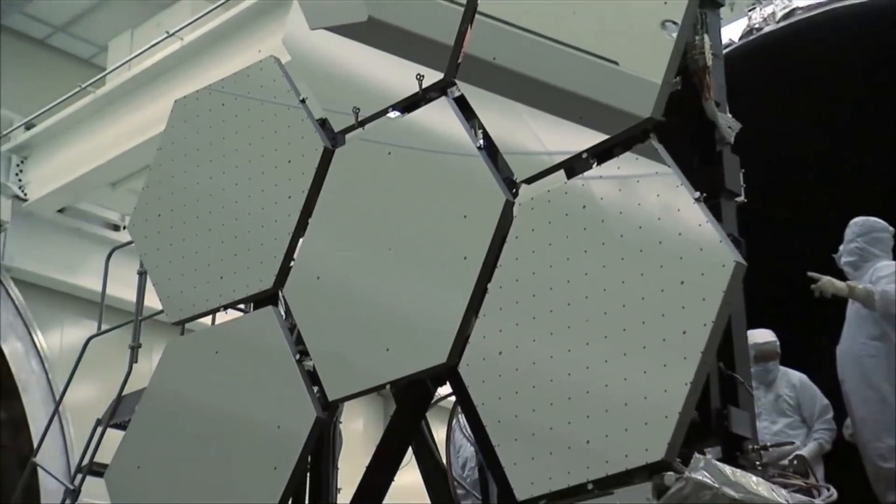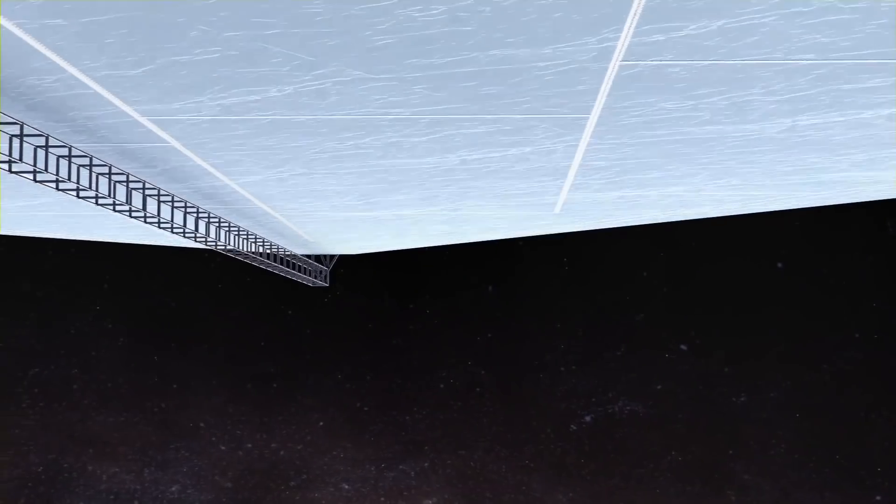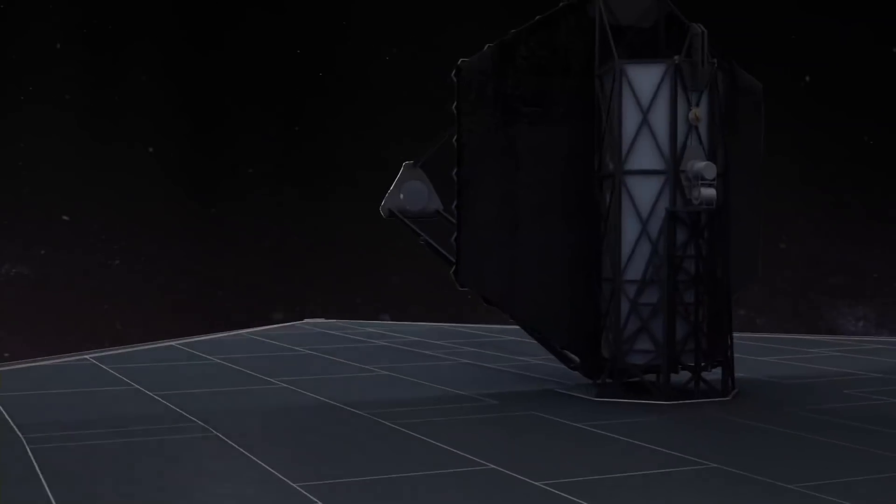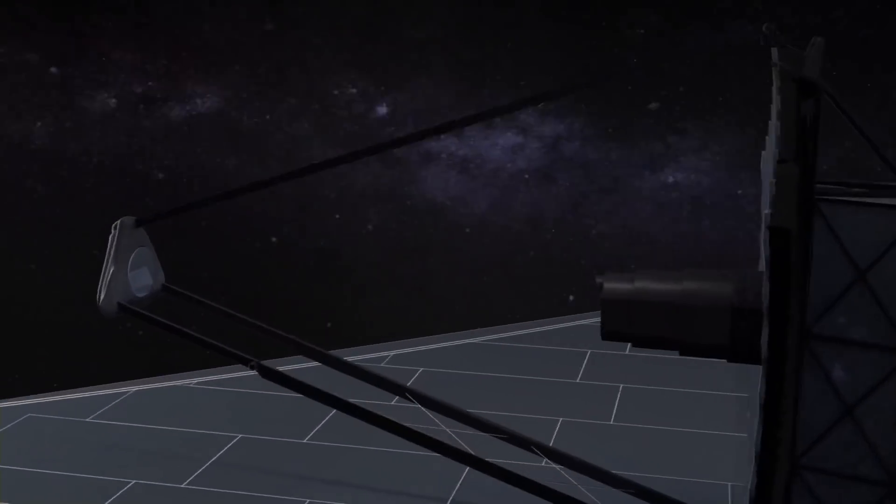The current LUVOIR-B design adopts JWST blueprints, essentially being an incrementally larger variant of the JWST, which has a 6.5-meter segmented main mirror.